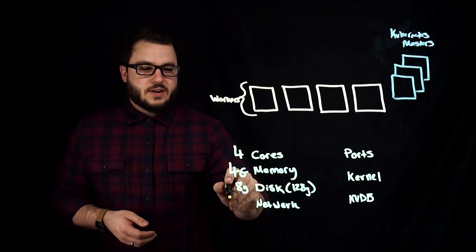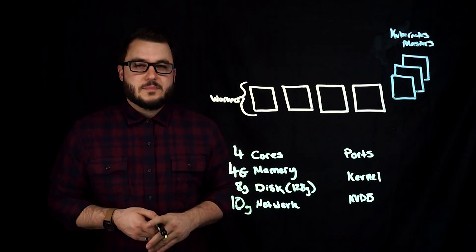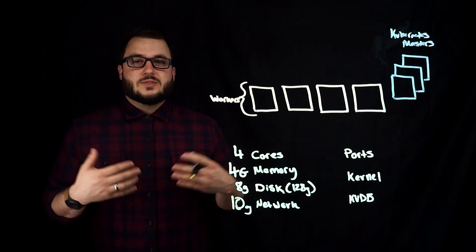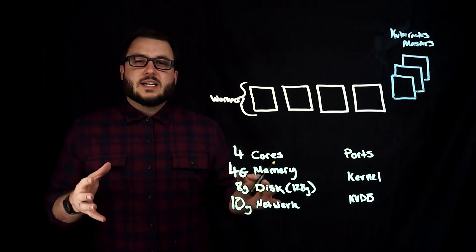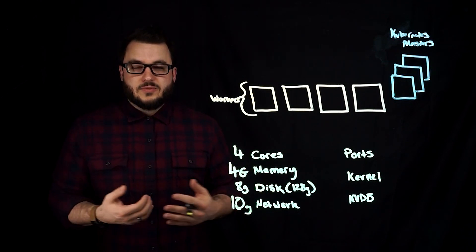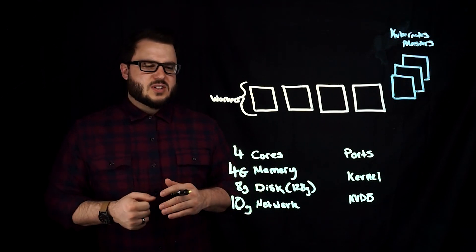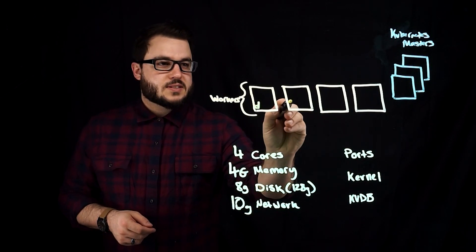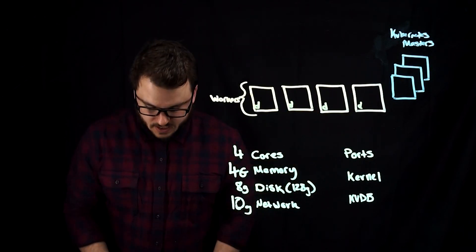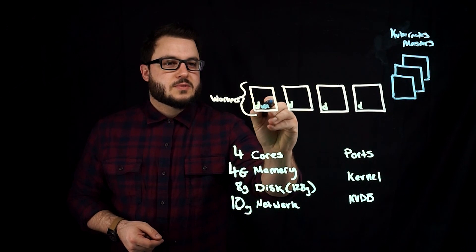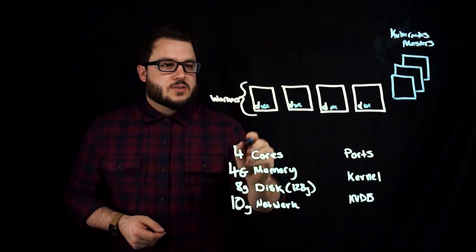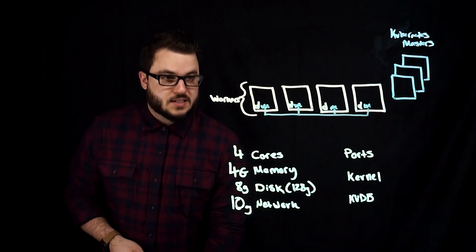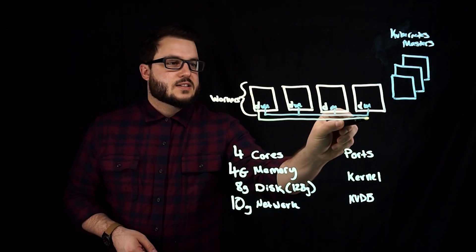For network, we recommend a 10 gig link between them. There is a management and data network. You can separate your control plane traffic from your data, aka replication and storage IO from applications onto separate networks. So a data network will exist, we're labeling this B, and a management network will also exist, labeled M.